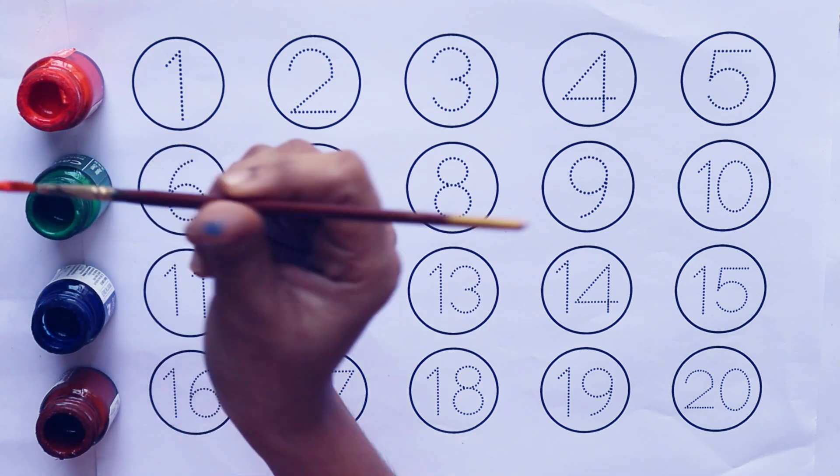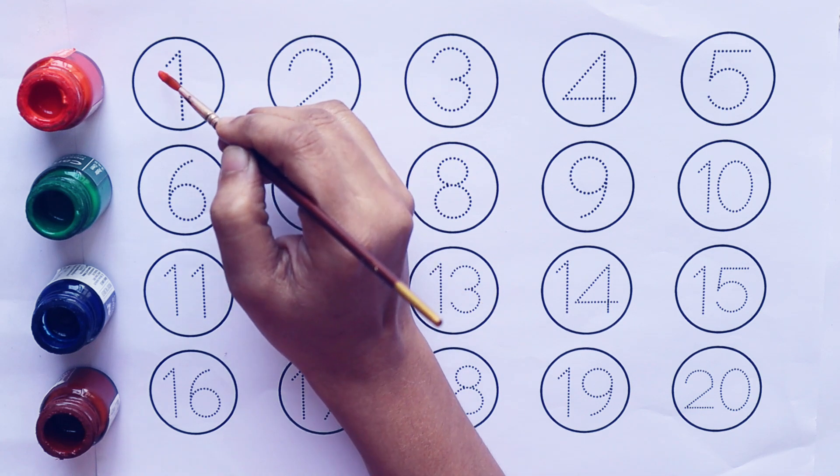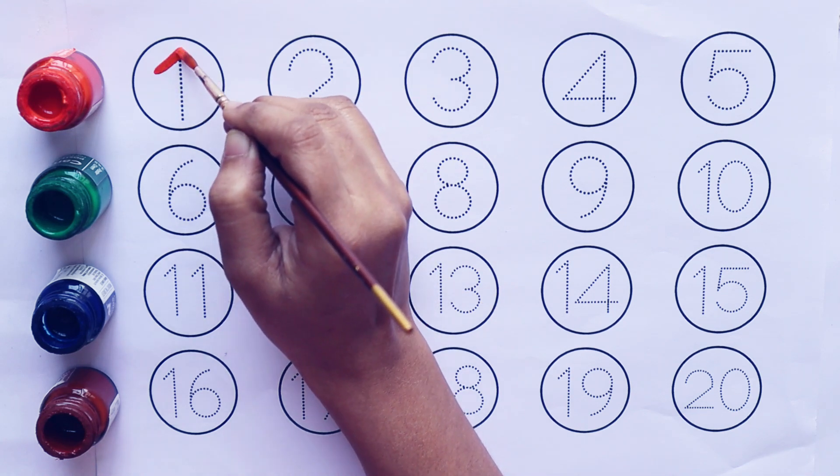Orange color. Let's write 1 to 5 numbers with orange color.